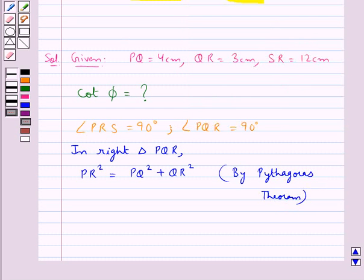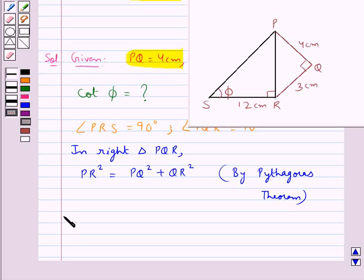We know that PQ is equal to 4 cm and QR is equal to 3 cm. Substituting these values, we have PR square is equal to 4 square plus 3 square. So PR square is equal to 16 plus 9, equal to 25.